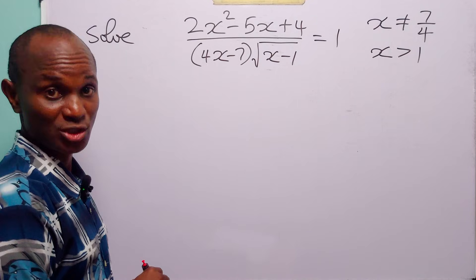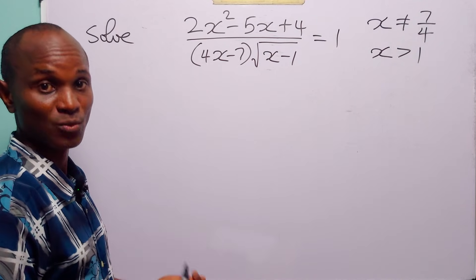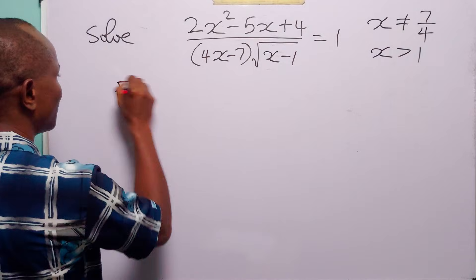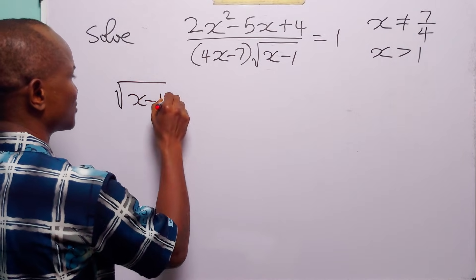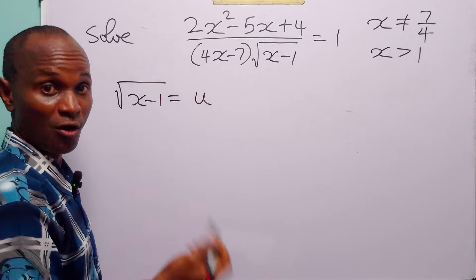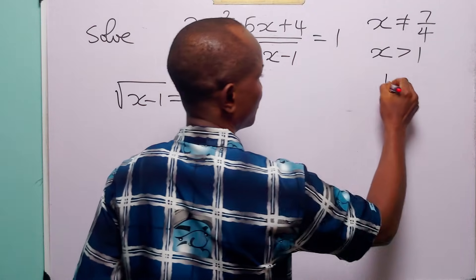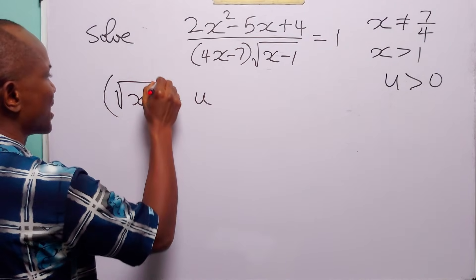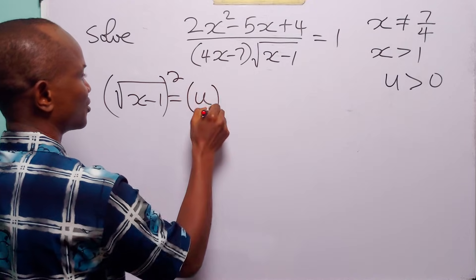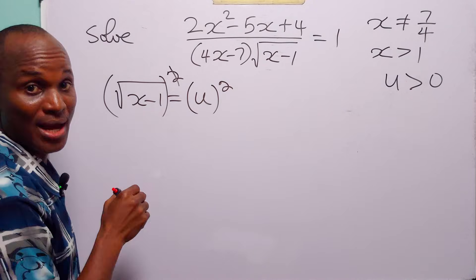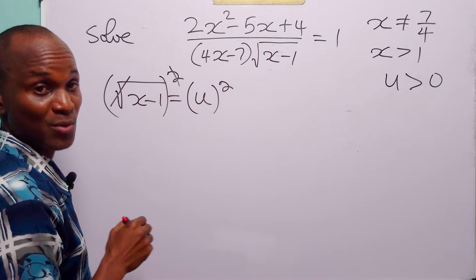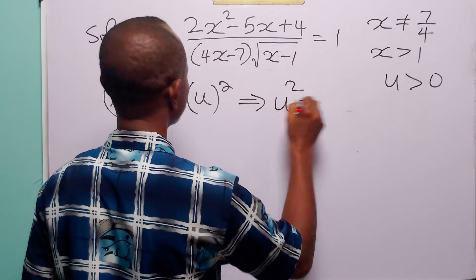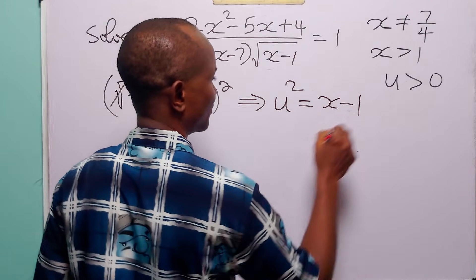To solve the equation proper, let us begin with a substitution. Let us call the square root of x minus 1, u. Of course, u must be greater than 0. When we square both sides of this equation, the square takes care of the square root, and we have that u squared is equal to x minus 1.